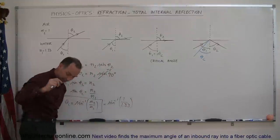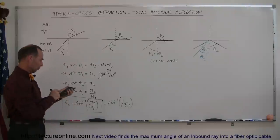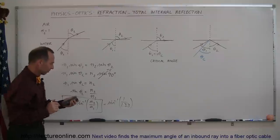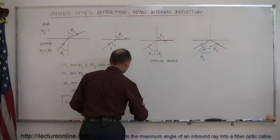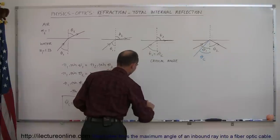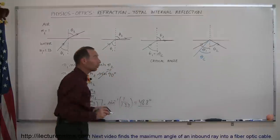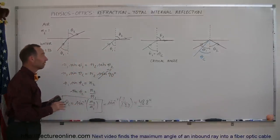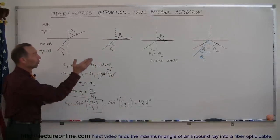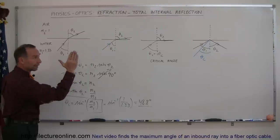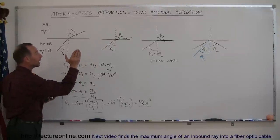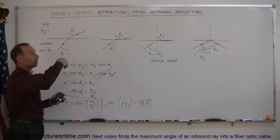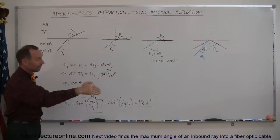And then if we grab our calculator, so we take 1 divided by 1.33 and we take the arc sine of that and it turns out it's 48.8 degrees in this particular case. So that's the critical angle which means that if you shine a beam of light from underneath the water to the surface and there's air above and you make that angle more than 48.8 degrees relative to the normal, the light will not leave the water. It will simply reflect off the surface and come back down.